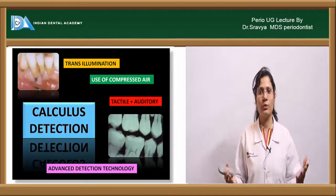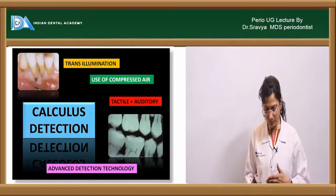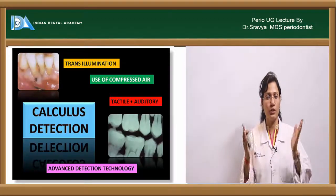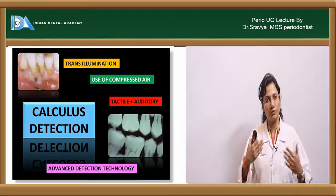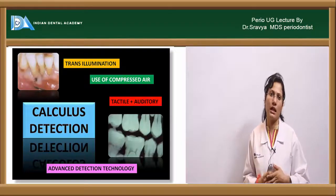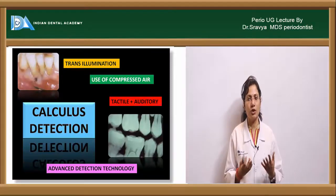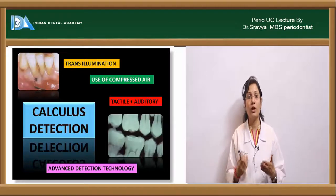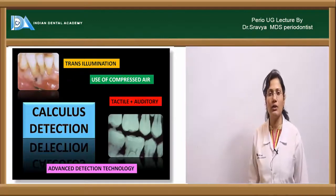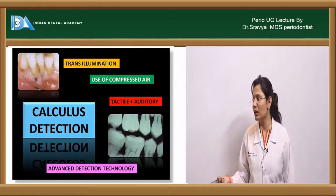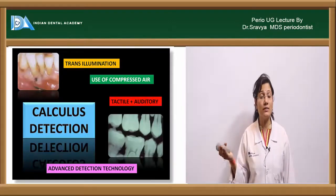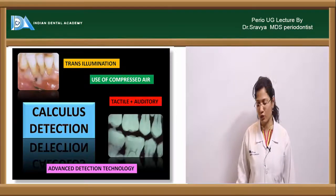After covering composition, classification, characteristics, sources, theories, and heavy vs. light calculus formers, we turn to detection. As a dentist, you must know how to detect calculus. Methods include: clinical methods such as the exploratory method (using an explorer like the Sheffield's Hook Explorer, number 23), transillumination, use of compressed air, and tactile and auditory perception. Radiographs can also be used, though they are not very sensitive. Advanced detection systems and combined detection-plus-removal systems are also available.